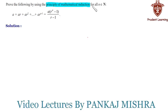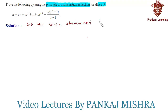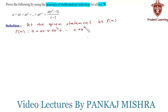Prove the following by using the principle of mathematical induction for all n belonging to natural numbers. Let the given statement be P(n), such that a plus ar plus ar squared, all the way up to ar raised to n minus 1, equals a times r raised to n minus 1, upon r minus 1.